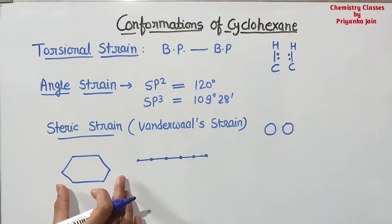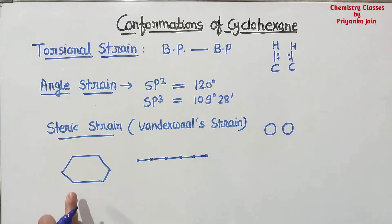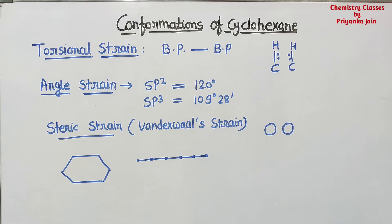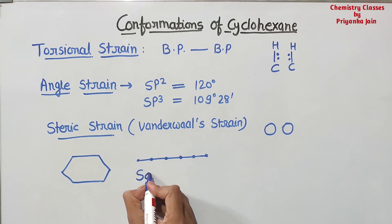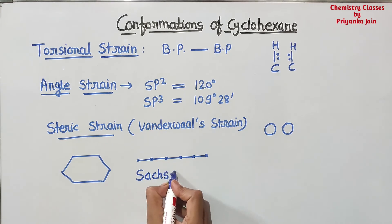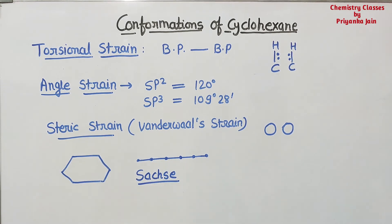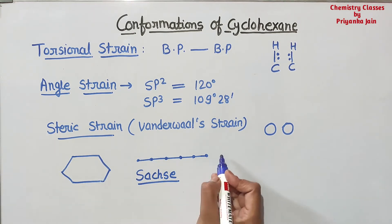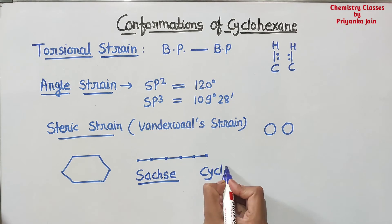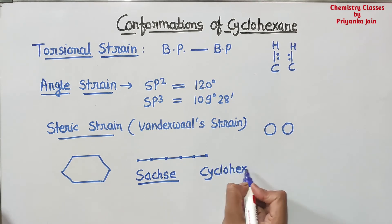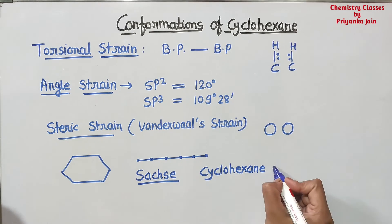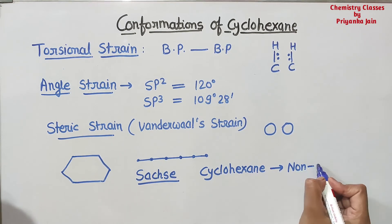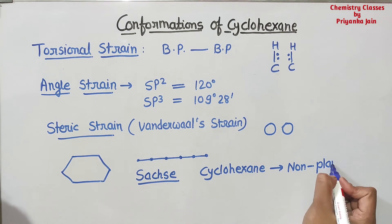So this molecule should be unstable. But actually this molecule is very stable — cyclohexane is a very stable molecule. For this, there was a scientist who proposed that cyclohexane is actually a non-planar molecule.